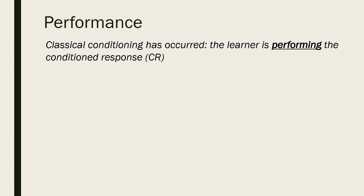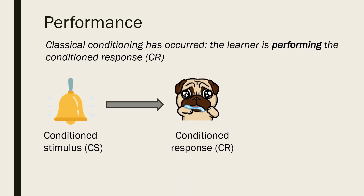Once classical conditioning has occurred, the association between the two stimuli has been learned. The neutral stimulus is now referred to as the conditioned stimulus, as it can be presented by itself and elicits the conditioned response. This is known as the performance stage as the learner is performing the conditioned response. In Pavlov's experiments, the dogs salivated at the sound of the bell without the food being present.